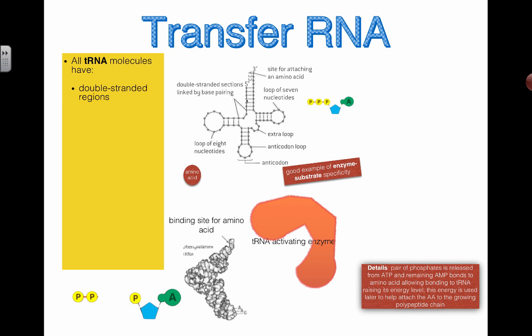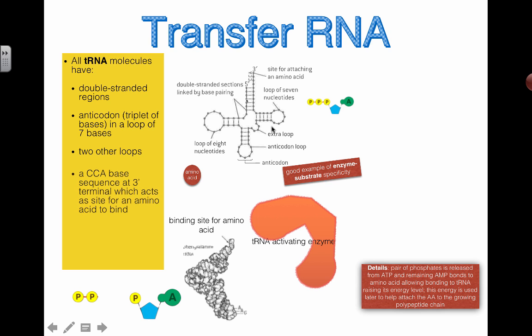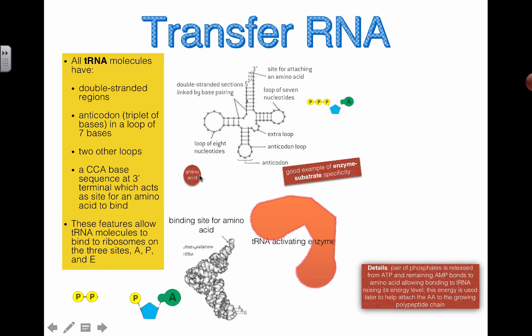So all tRNA molecules have these double stranded regions. Helps to give it its particular three-dimensional shape. There's an anticodon area at the bottom. There's two other loops that exist, and up at the top if you really want to get nerdy with this, then you should know that there's a CCA end terminal here and that's the place where the amino acid is actually going to bind. And these features will allow this particular tRNA molecule to actually bind on the correct sites in the ribosome to help them actually match up to the codon and drop off their amino acid.